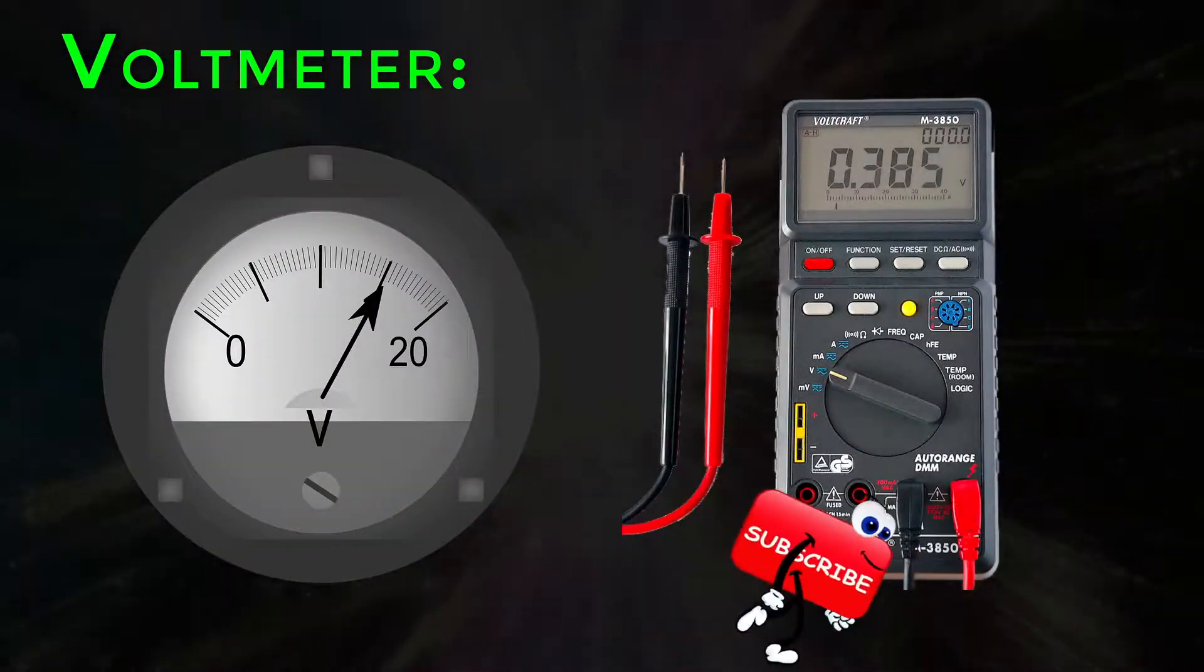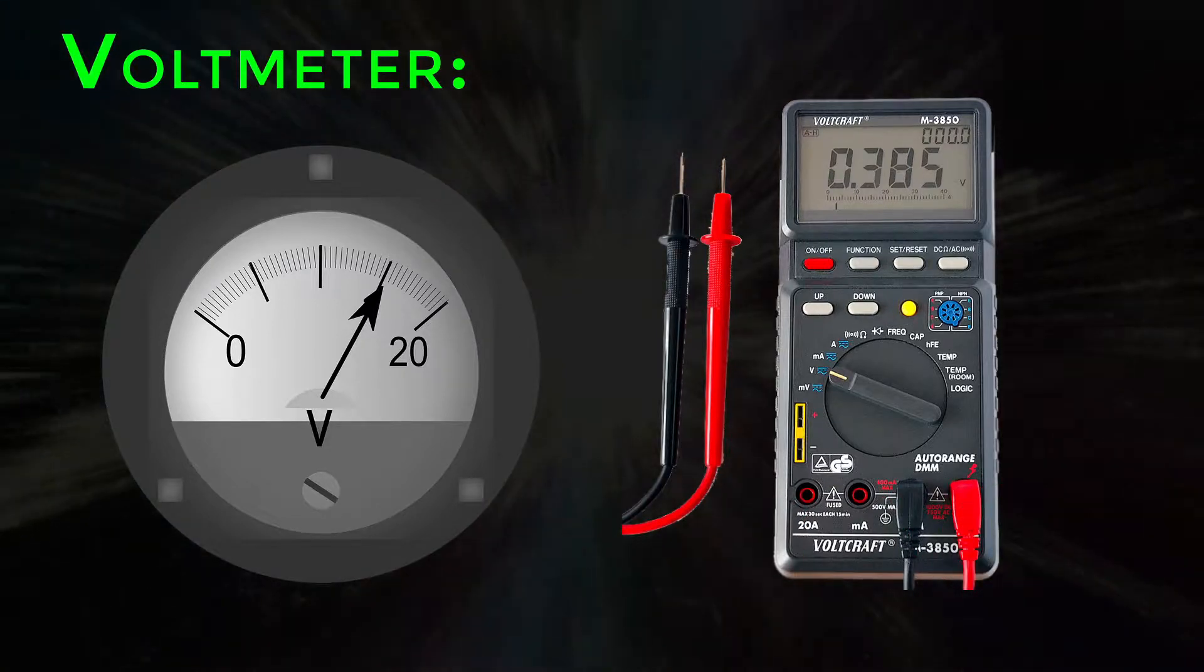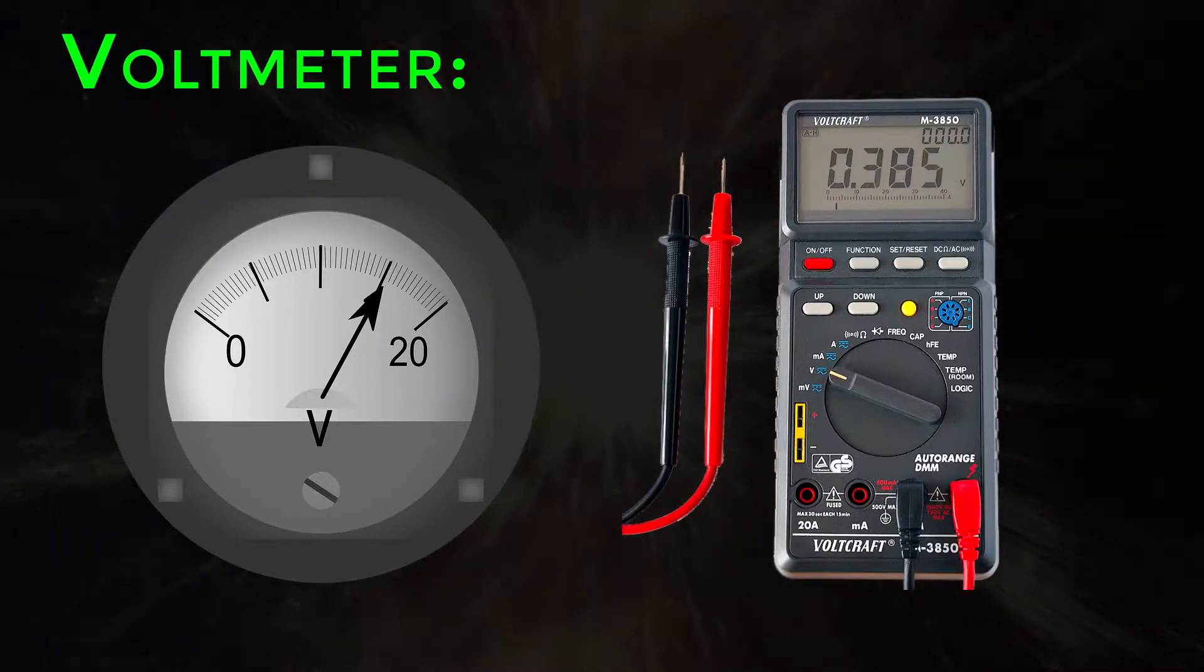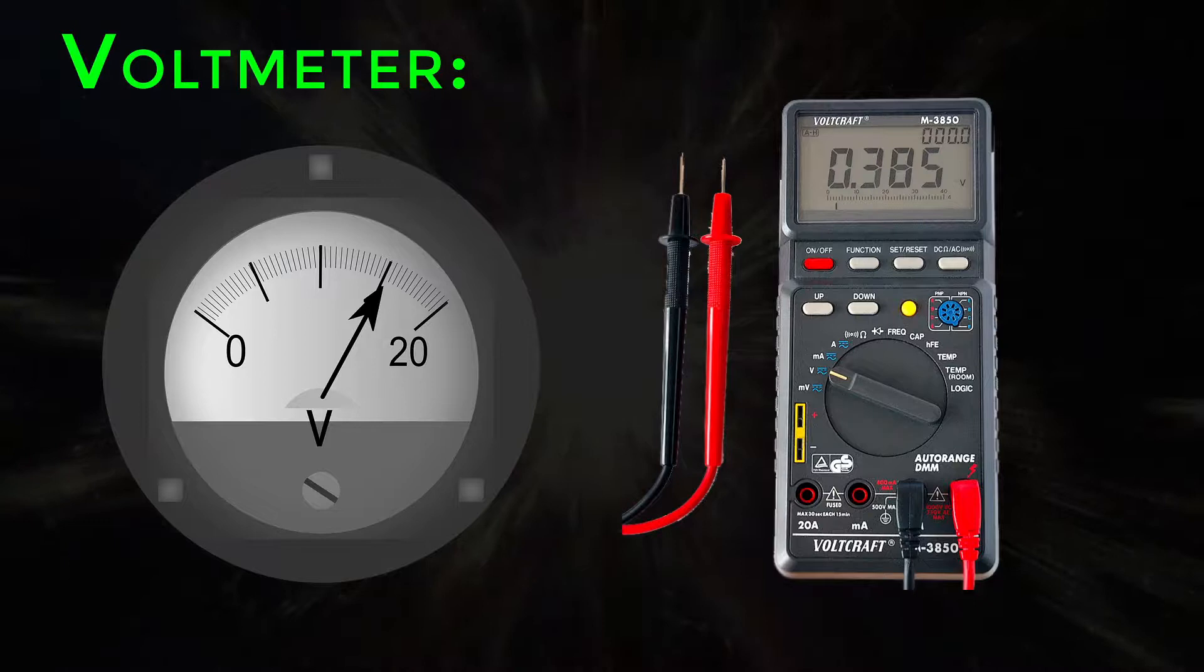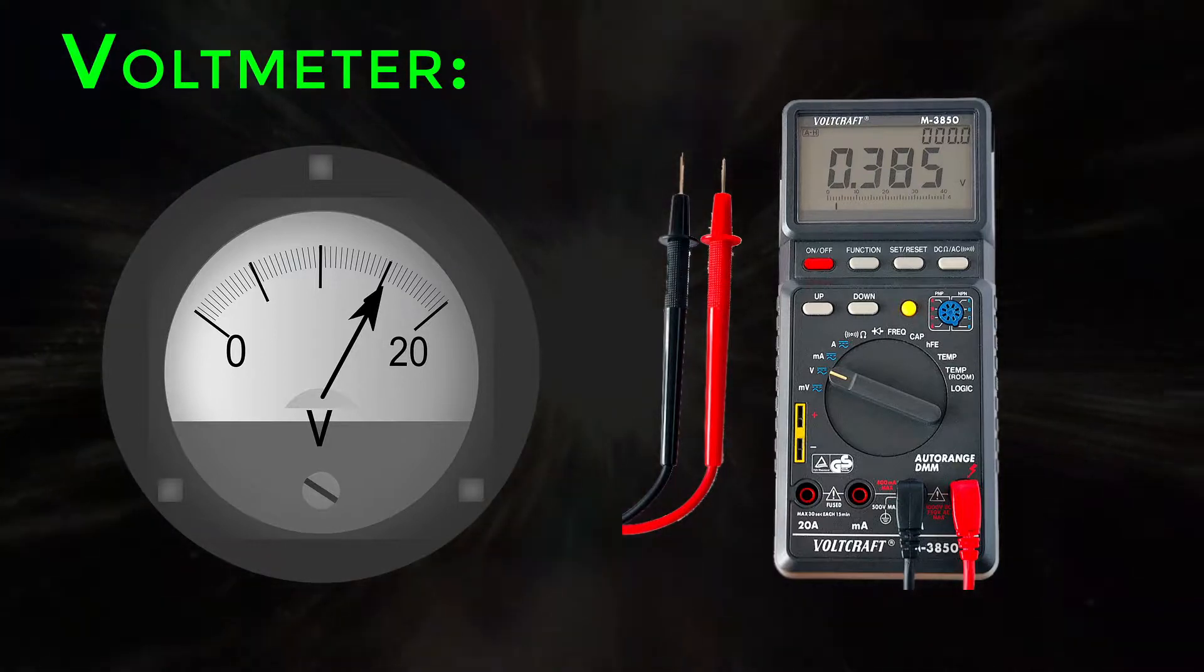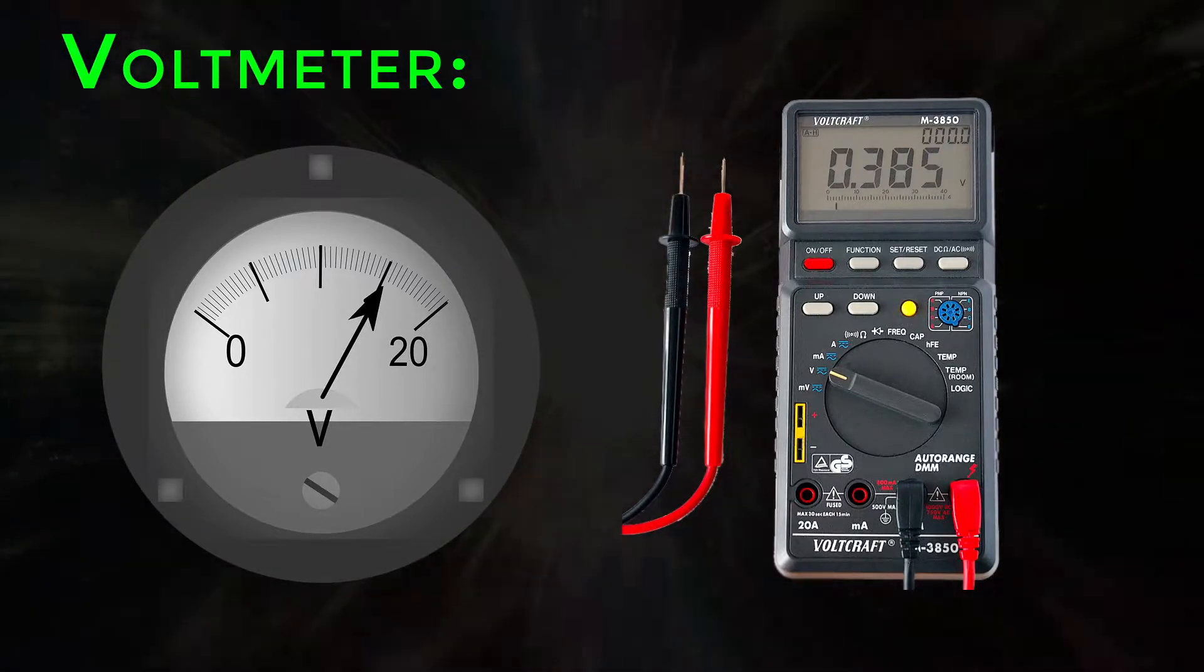Analog voltmeters move a pointer across a scale in proportion to the voltage of the circuit. Digital voltmeters give a numeric display of voltage by use of an analog to digital converter.